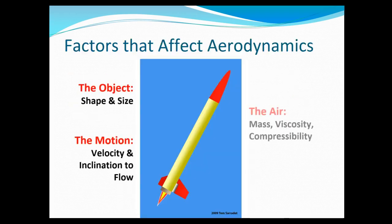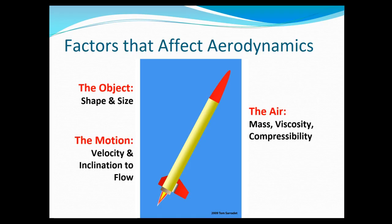Let's look at some things that affect a rocket. The size and shape—this is true for anything, not just a rocket. We want the rocket to go fast through the air, so it's long and thin, and it has some aerodynamic surfaces that we'll talk about. Motion is very important, so how fast it's going.